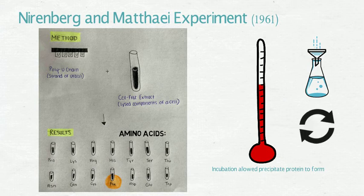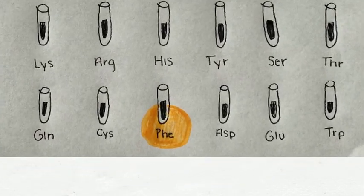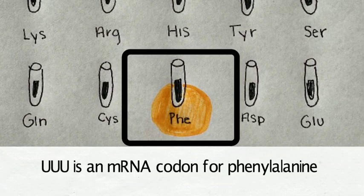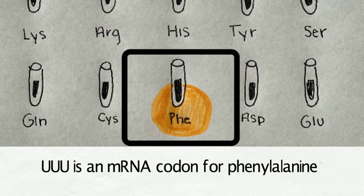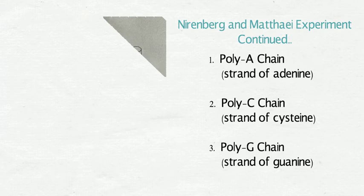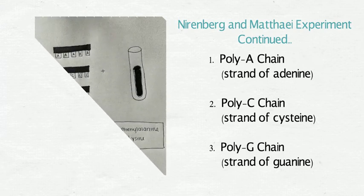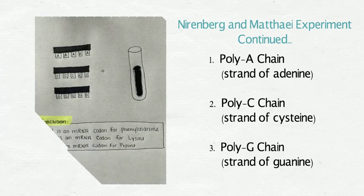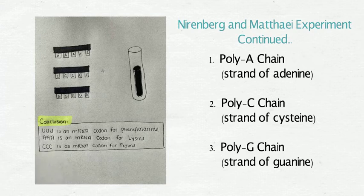Nirenberg and Matthaei repeated the procedure 20 times, allowing each amino acid to be radioactive. From this, the scientists discovered that poly-U produced a protein chain of radioactive phenylalanine. In an effort to learn more, Nirenberg and Matthaei repeated the entire experiment three more times with a poly-A chain, a poly-C chain, and a poly-G chain.